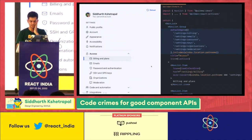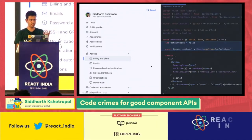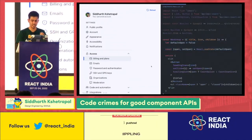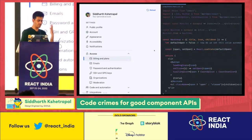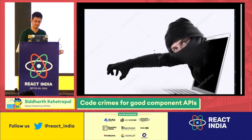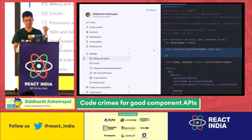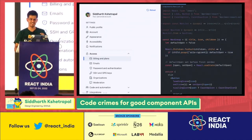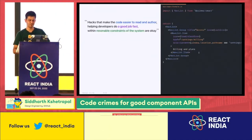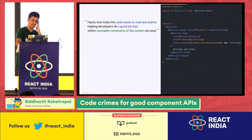So how do we set this value automatically? One way is crime — same as before, using React.Children to look through them: if one child has aria-current it should be open, otherwise closed. Easy peasy, we all go home. But remember: hacks are only okay within reasonable constraints of the system.